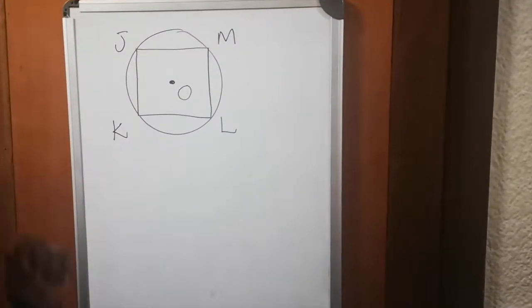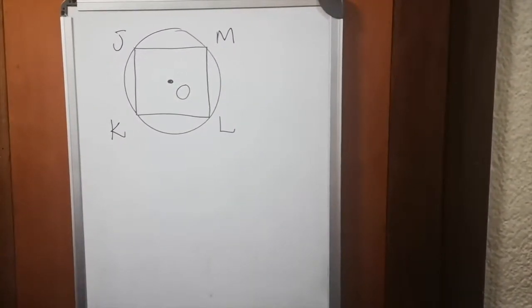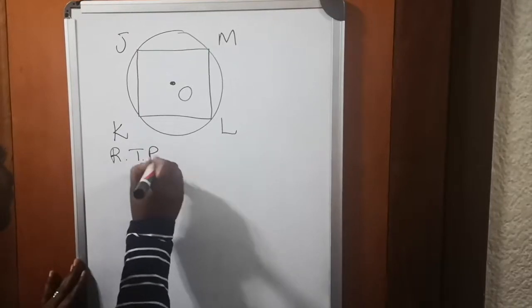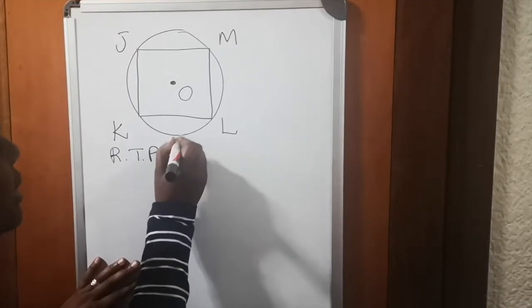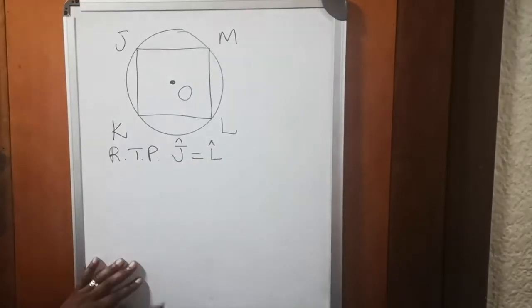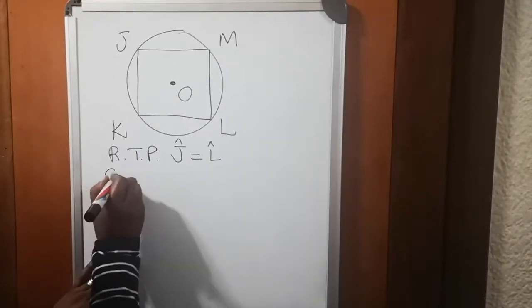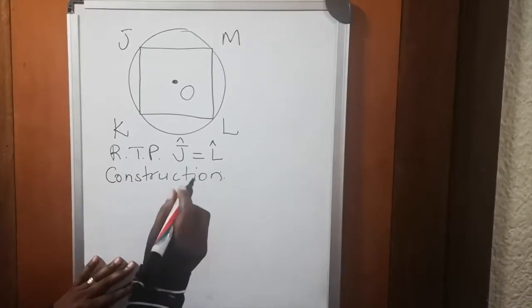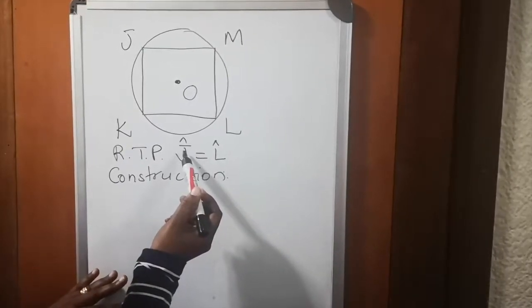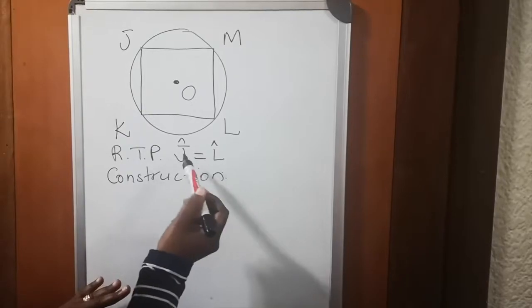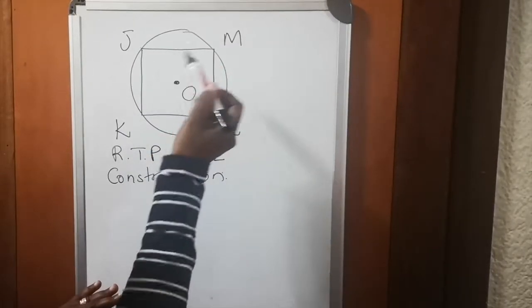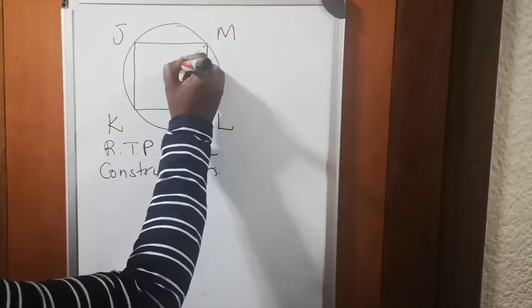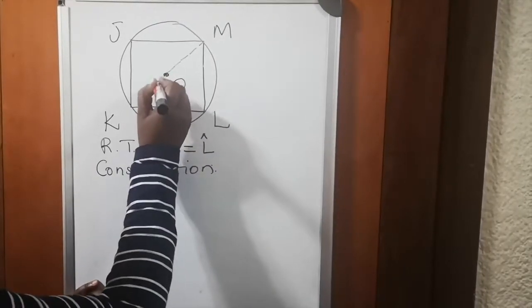Now we're on our whiteboard. We're going to prove the theorem that states that opposite angles of a cyclic quad are supplementary. So we're going to start with what we are required to prove. We are required to prove that angle J plus angle L equals 180 degrees. Construction: With this theorem construction is very important. You must make sure that you don't cut angle L and angle J because you end up not having them. So you construct from the other angles, the other two angles that are not part of your proof.